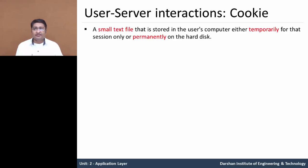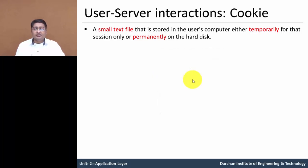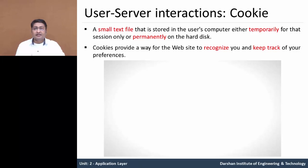A cookie is a small text file that is stored in the user's computer, either temporarily or permanently stored on the user's hard disk. A cookie provides a way for the website to recognize you — it keeps a track record of your preferences and activity of visited websites on your computer hard drive. Let us understand how cookie works in this animation.